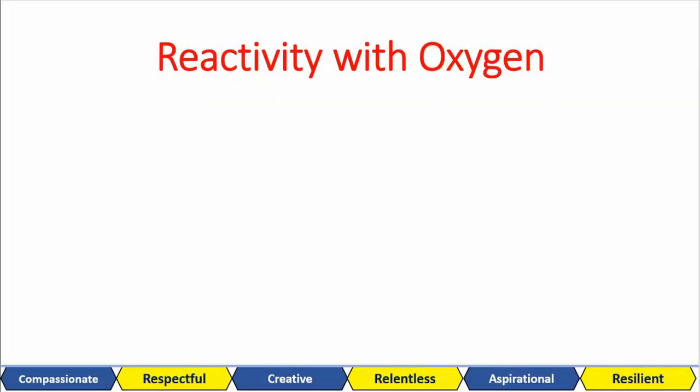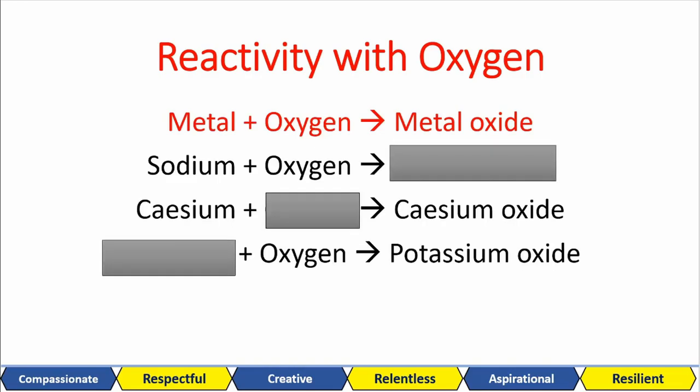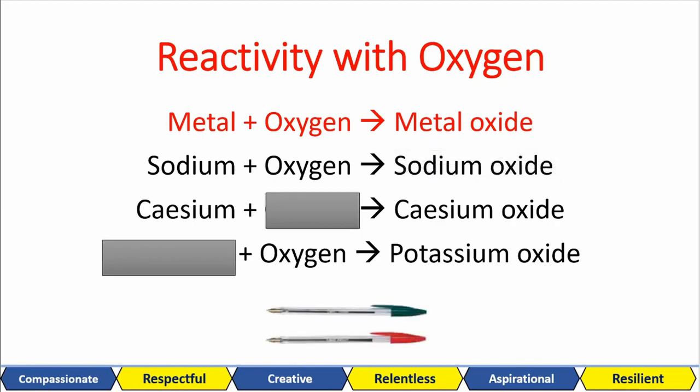The second reaction is with oxygen. This is the general word equation for that. You know what to do so do the thing! Well for the first one, we added sodium so we're forming sodium oxide. The next one, cesium plus something gives us cesium oxide. We must have added oxygen. And then we're forming potassium hydroxide. So the metal that we added was potassium. Straightforward.